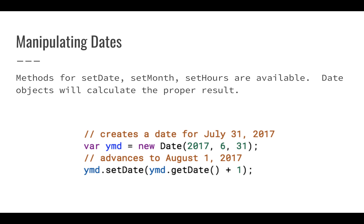We can also manipulate dates. Using setDate, setMonth, setHours, and similar methods, the date object will create the proper result. For example, if we create a date for July 31st, 2017 and add one day using setDate(date + 1), it won't give us July 32nd — it rolls forward to August. We'll get into exercises using objects and dates. They can be a little confusing at first, but after using them they're very useful for working with spreadsheets in Apps Script.